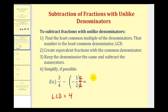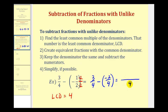So now we can rewrite this as three-fourths minus negative two-fourths. Our denominator is now four, so it stays four, and the numerator is three minus negative two. Remember, three minus negative two is the same as three plus positive two — subtracting a negative is the same as adding a positive. So this difference is five-fourths.